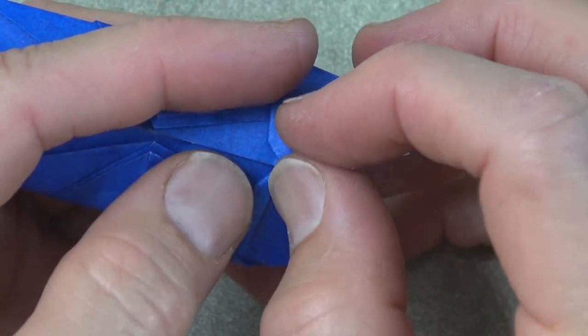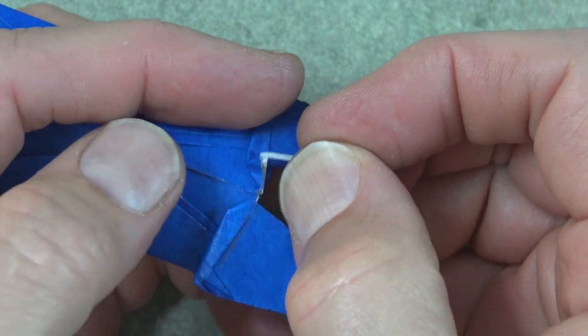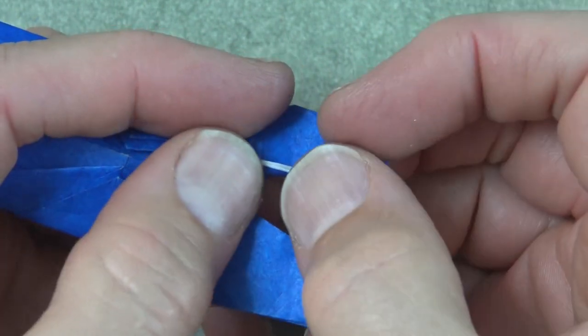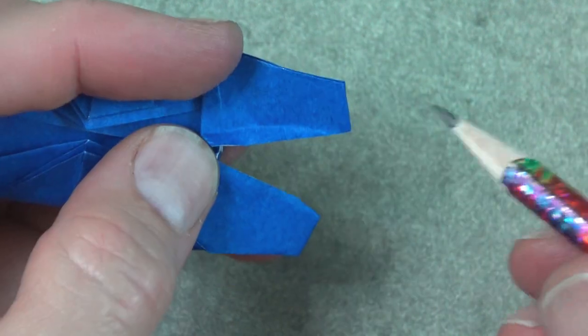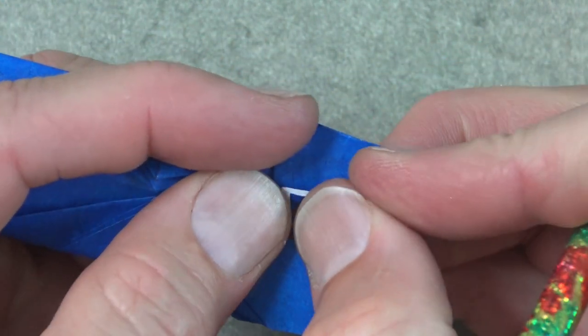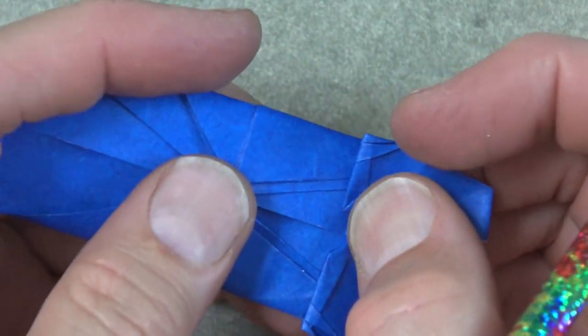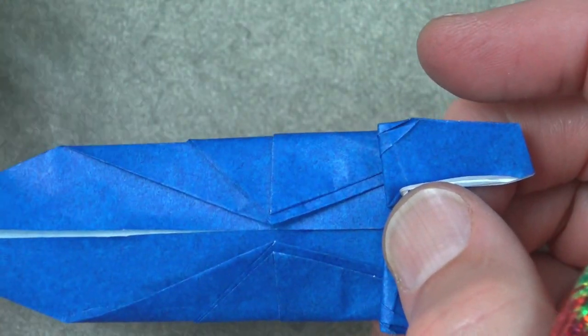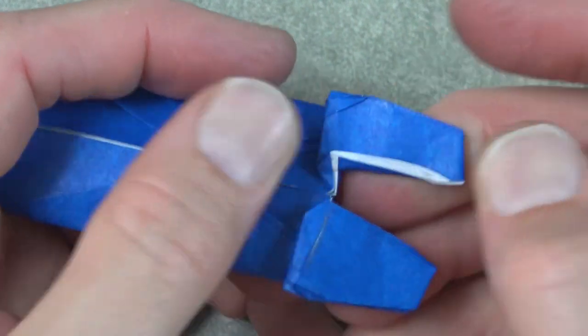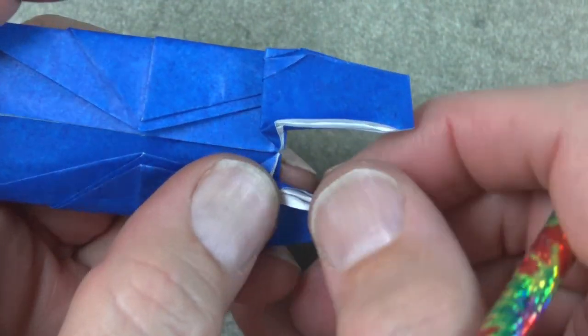And now fold this edge like this. We're folding on this point and we want to fold this edge to be parallel to this edge. Like that. And same on this side.